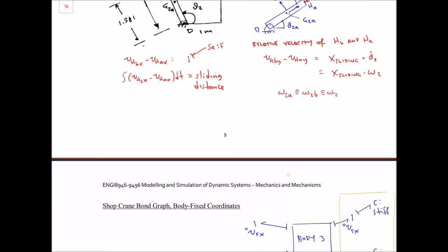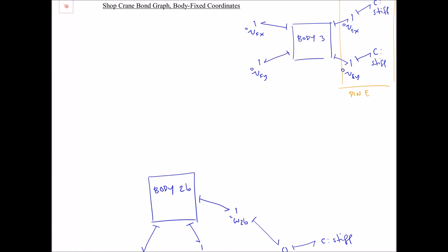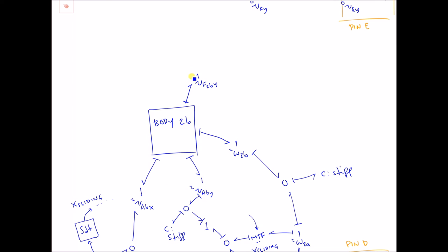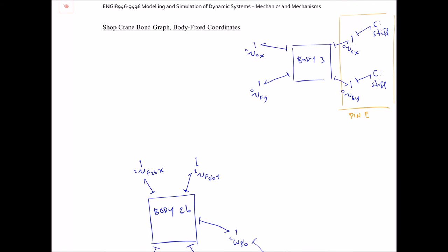Coming out of body 2b I'll have a one-junction for the velocity of F on 2b in the y-direction and another for the velocity of F on 2b in the local x-direction — both in frame 2. However, I can't simply equate the velocity components of point F on one body with those on the other body if those velocities are expressed in different coordinate frames.